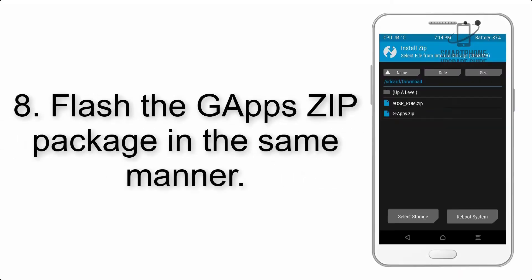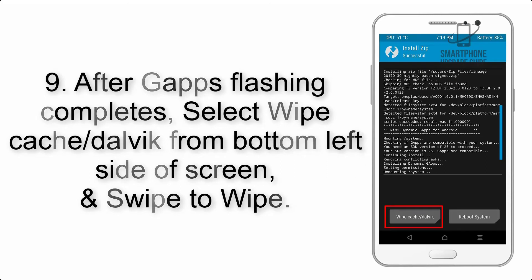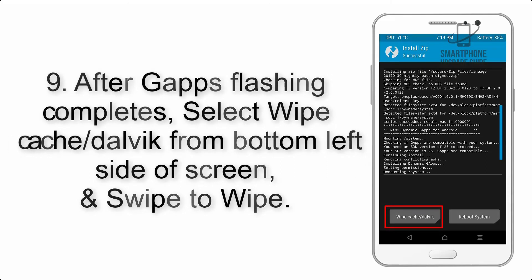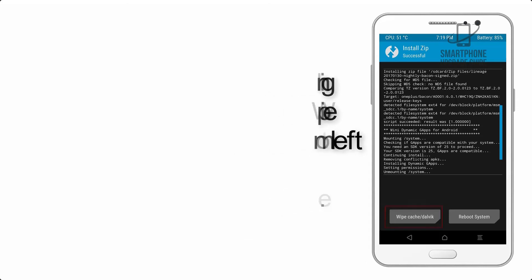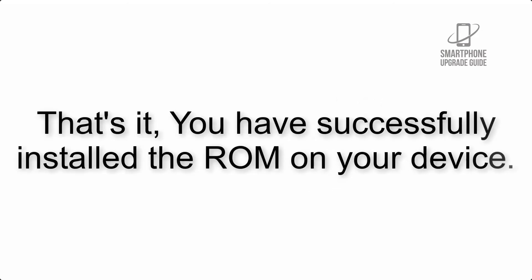Step 8: Flash the GApps zip package in the same manner. Step 9: After GApps flashing completes, select Wipe Cache and Dalvik from the bottom left side of the screen and swipe to wipe. Step 10: When the flashing process is complete, hit Reboot System. That's it — you have successfully installed the ROM on your device.